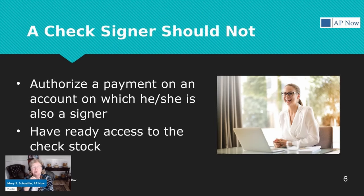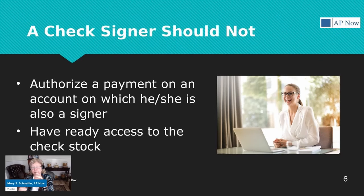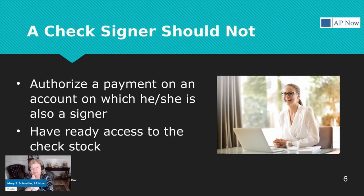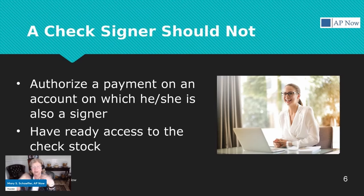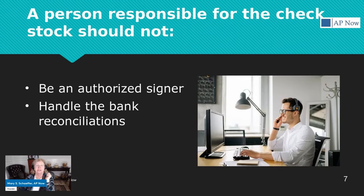Now let's turn our attention to the person who signs checks — and when I say check signers, I'm also talking about people who can approve ACH payments that have been set up. Usually when you issue an ACH, it's a two-step process: someone sets it up, another person releases or approves it. Those people should not be able to authorize a payment — they shouldn't say this item needs to be paid and then go ahead and pay it. Nor should they have access to the check stock.